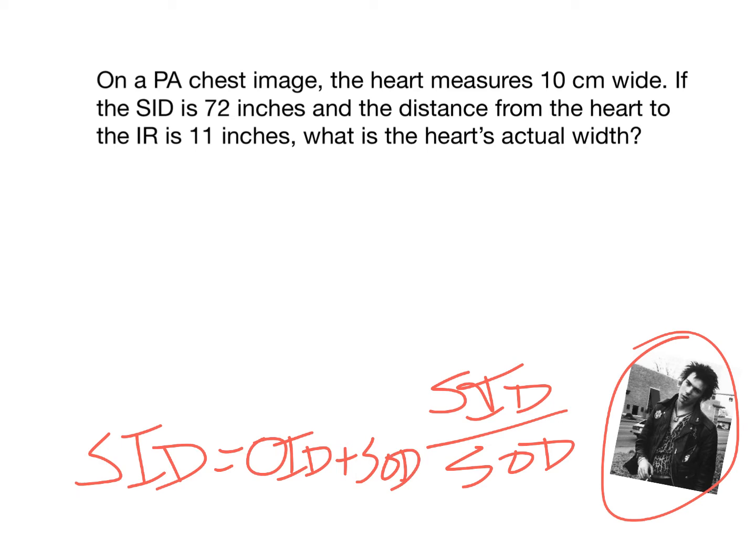So if I know these two little formulas, I can figure out the answer to this problem. Otherwise, I'm just kind of up a creek. So it's asking me about the heart measurement. The first thing I want to do is figure out what the SAD is in this instance. So I've got a SID of 72 inches, so I'm going to need to subtract out that OID that I'm given of 11 inches.